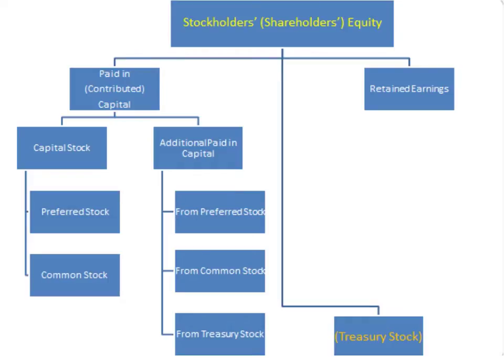Let's take a look at the effect of a stock split on shareholders' equity. Let's say you currently have one share of common stock with a $10 par value, and you're going to split it into smaller shares. Now you have two shares and your par value went down to $5 a share. So you have two shares now and they're $5 each. But let's see if anything else changed.